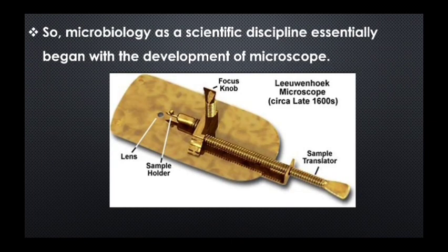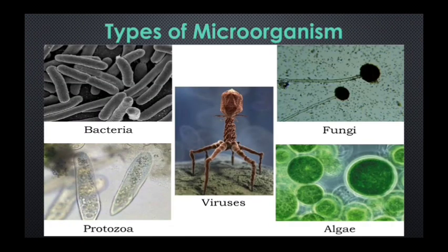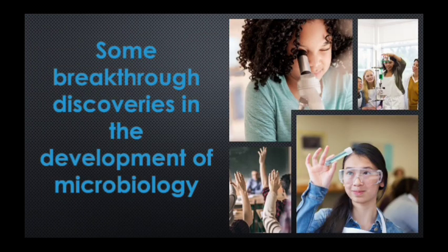Microbiology as a scientific discipline begins with the development of the microscope. There are different types of microbes which we will discuss in detail in the following classes — these are bacteria, viruses, algae, fungi, and protozoa. Now we will discuss a few scientists and their major breakthrough discoveries in the field of microbiology.